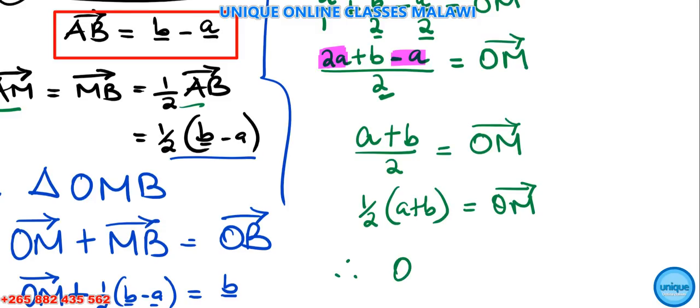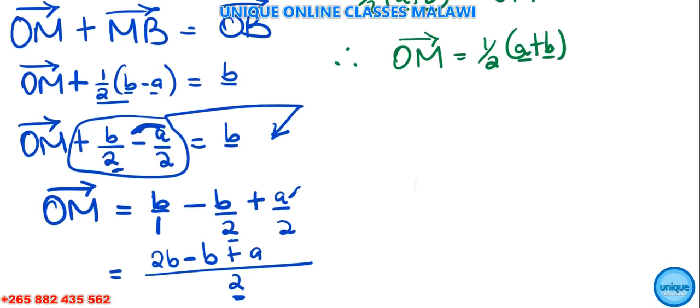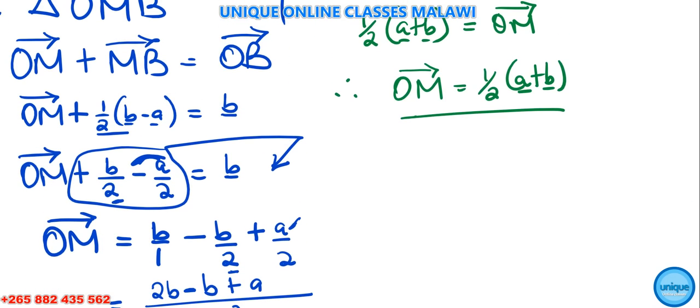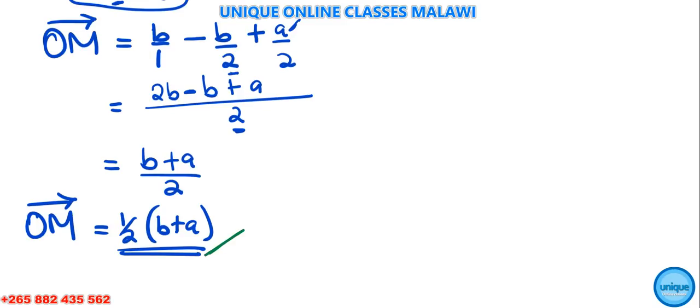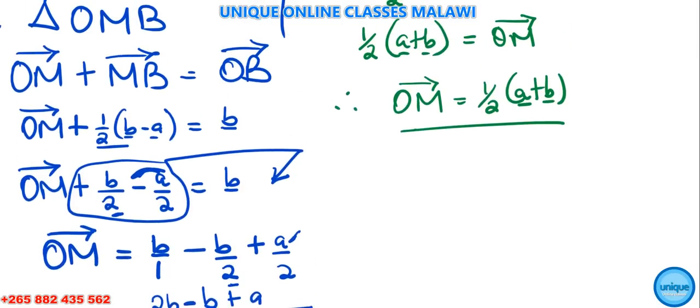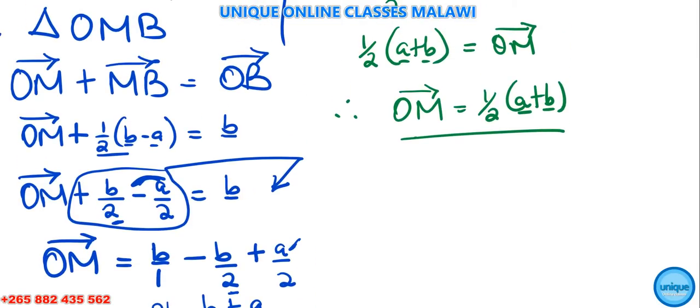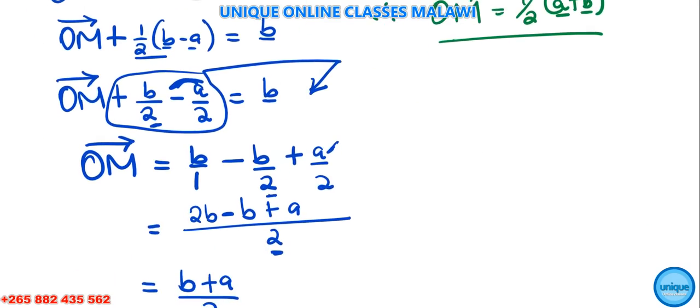Therefore OM equals ½(a + b). This is the same as our previous result: ½(b + a) and ½(a + b) are the same thing, so this is how we can solve this problem.